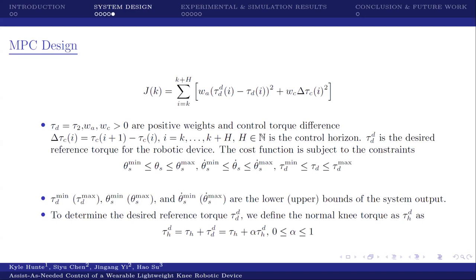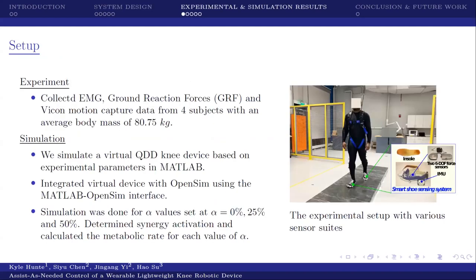Now we move on to the experimental and simulation results. The experiment was set up first by collecting data from EMG and ground reaction forces, and also Vicon motion capture data from four subjects. For our simulation, we simulated the QDD device in MATLAB and interfaced it with the MATLAB OpenSim interface. The simulation was done for values of alpha at 0, 25%, and 50%. From those simulated results, we were able to determine the synergy activation and also calculate the EMG for each value of alpha.